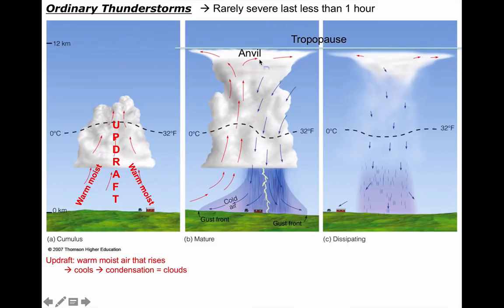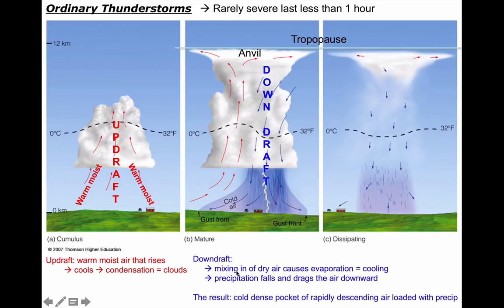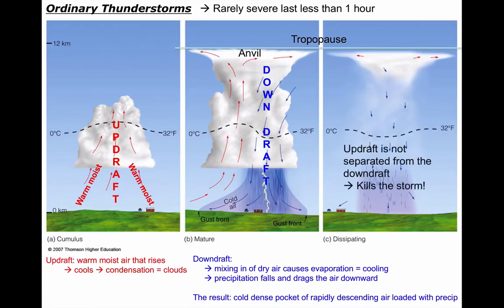At this point, what went up starts to come back down — we call that a downdraft. The downdraft is a really cold pocket of air full of precipitation falling to the ground. So if the updraft makes the cloud, the downdraft is where the precipitation forms. The reason ordinary thunderstorms are rarely severe is because the updraft and the downdraft are co-located. What went up was ultimately destroyed by gravity pulling the downdraft back down — killing the storm after about an hour.